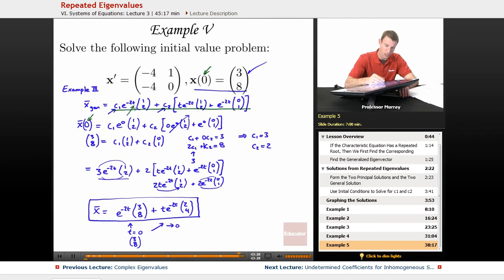I plugged in t equals 0. So, just wherever I saw a t, I threw in a 0. So, all my e to the negative 2t's become 1. And the t e to the negative 2t actually drops out and becomes 0 because of that t. And so, I just end up with c1 times (1, 2) plus c2 times (0, 1). And that resolves itself into two equations and two unknowns. They're very easy equations. I get my solution c1 equals 3, c2 is equal to 2.